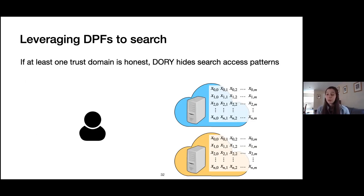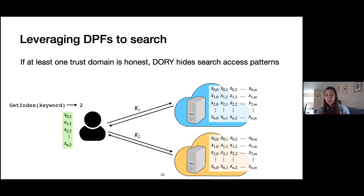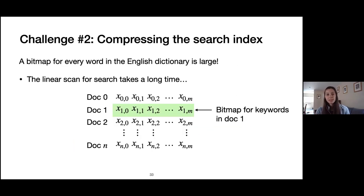We leverage DPFs to hide which column is being retrieved in Dory. Instead of one server, we store identical copies of the index at multiple servers. The client generates DPF keys for the column index corresponding to the keyword, sends them to each server, each server evaluates the DPF keys over all columns, sends back responses, and the client assembles the original column — outputting all positions where the bit is one. This gives us the property that if at least one trust domain is honest, Dory hides search access patterns.